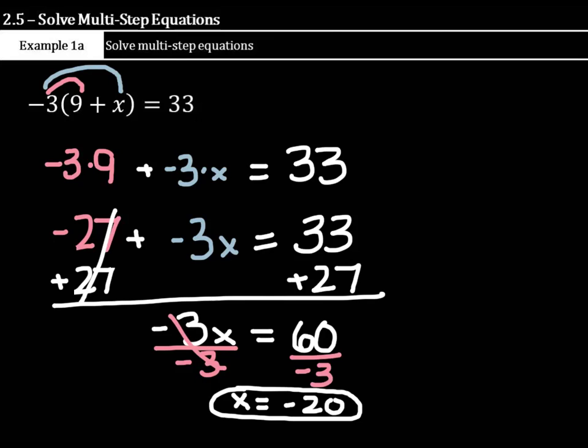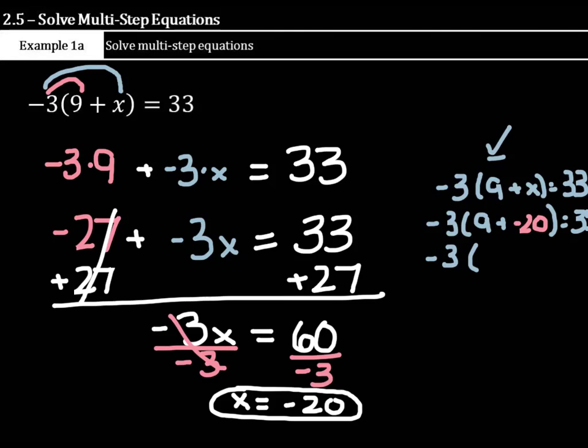These equations do not ask us to show a check step, but you could. You always start a check step by the original equation. And it doesn't hurt to show when you have time. You make your substitution in. 9 plus negative 20 is negative 11. And negative 3 times negative 11 is a positive 33 equals 33. So you know we're right.